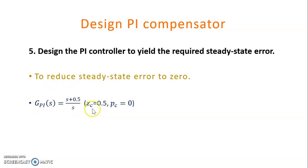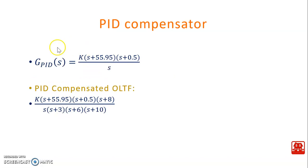For the PI controller, we pick a zero Zc close to the origin. In this case, Zc is chosen at negative 0.5 and the pole Pc is placed at the origin. This gives the transfer function for the PI controller. Combining the PD and PI controllers gives the full PID transfer function. The PID compensated open-loop transfer function includes Zc from the PD controller, Zc from the PI controller, the original zero, the three original poles, and the PI pole at origin.